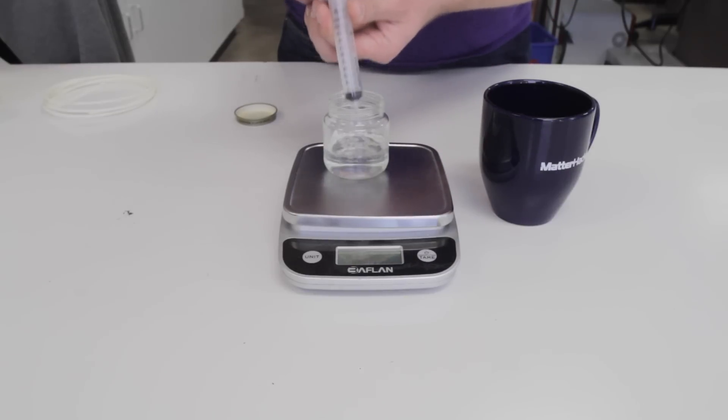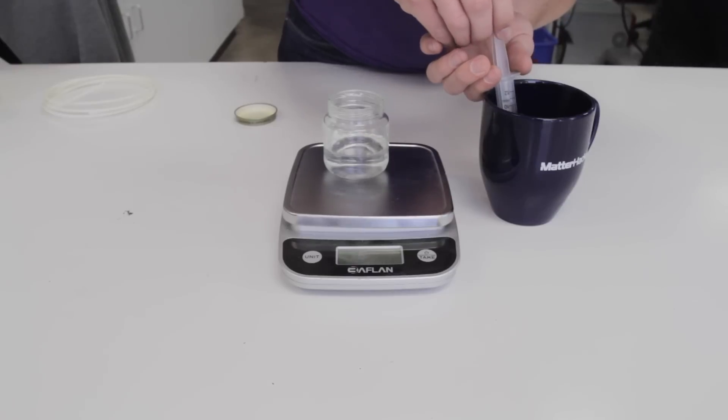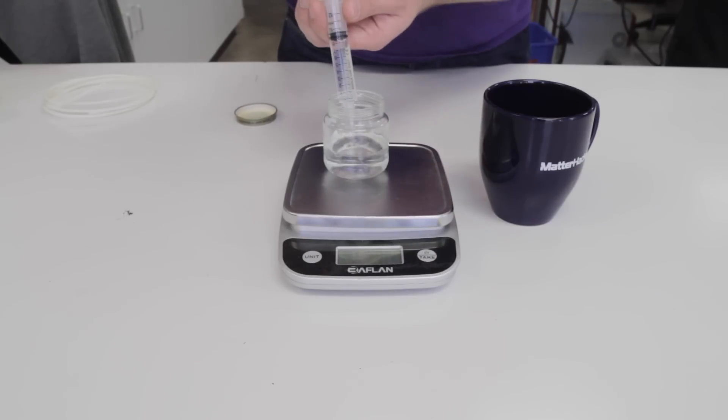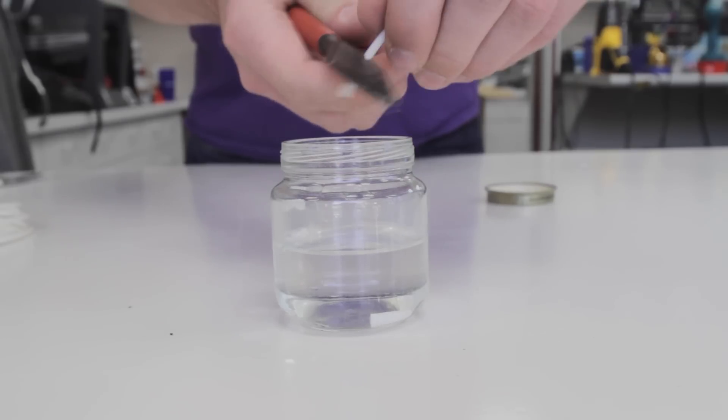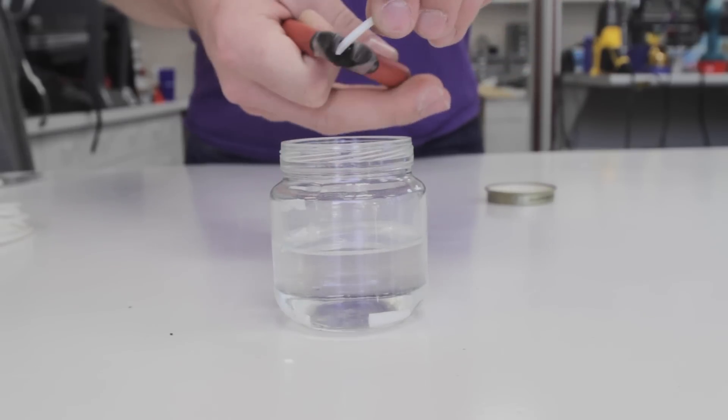Measure out 50ml of acetone using your measuring cup, or in this case, a syringe. Use wire cutters or snips to cut the filament into small pieces. That way they'll dissolve quicker.